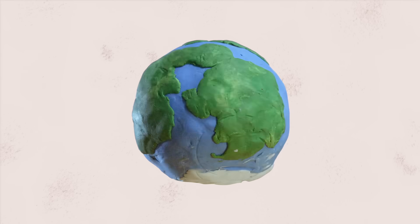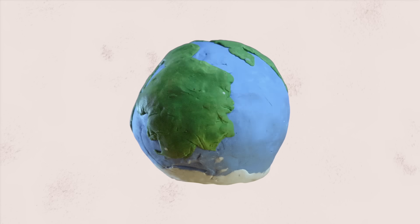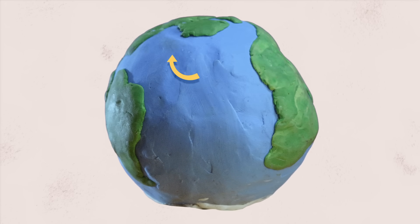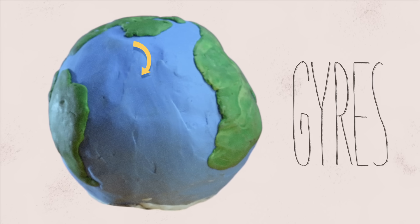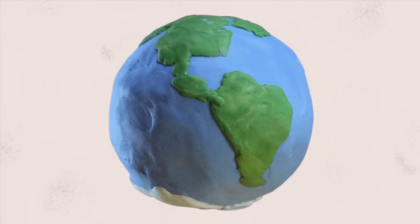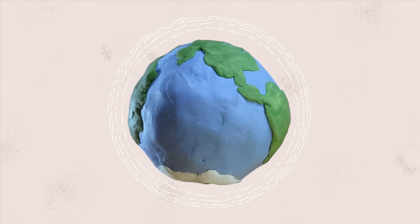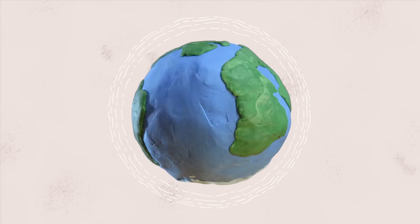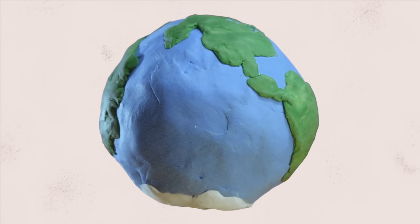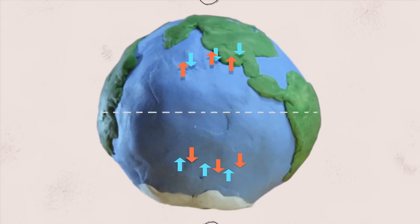If you zoom out to look at the patterns of surface currents all over the Earth, you'll see that they form big loops called gyres, which travel clockwise in the Northern Hemisphere and counterclockwise in the Southern Hemisphere. That's because of the way the Earth's rotation affects the wind patterns that give rise to these currents. If the Earth didn't rotate, air and water would simply move back and forth between low pressure at the equator and high pressure at the poles.